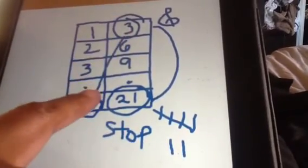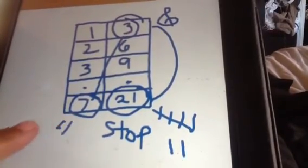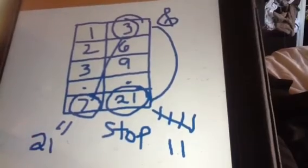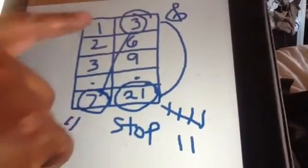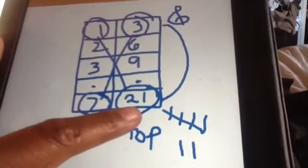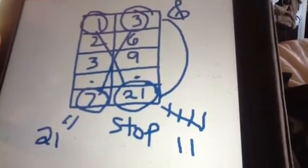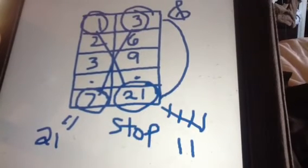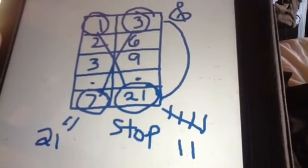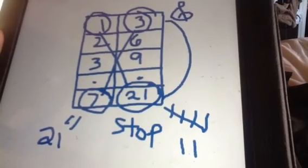Now let's check it. 1 times 21 also equals 21. That's how you multiply. And that's how you do input-output boxes with multiplication.